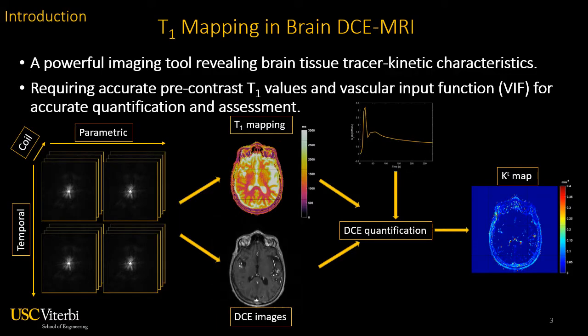T1 mapping is necessary in quantitative brain DCE MRI, which is a powerful imaging tool revealing brain tissue tracer kinetic characteristics. As shown in the workflow here, sets of multi-flip-angle T1-weighted MRI data are acquired. The data can vary along either parametric or temporal dimension, and can be used to reconstruct pre-contrast T1 maps and DCE time series images. With knowledge of the VIF, we can perform DCE quantification and estimate pharmacokinetic parameters, such as those shown on the right.